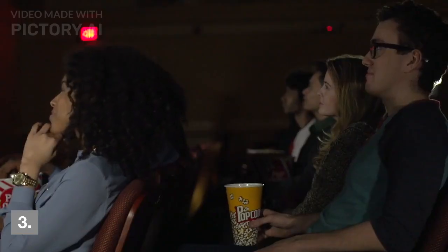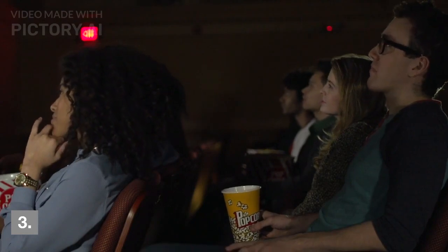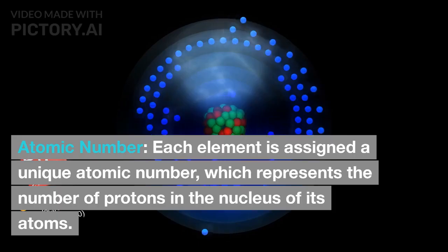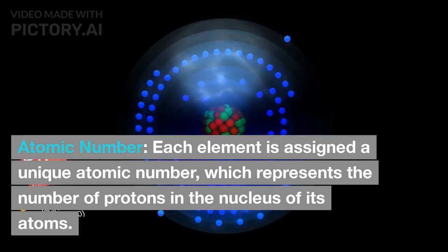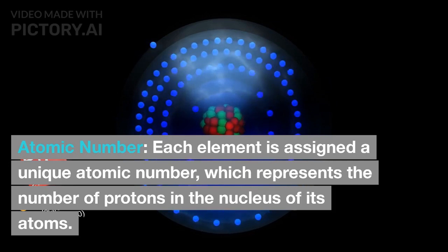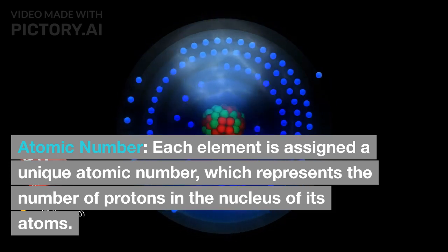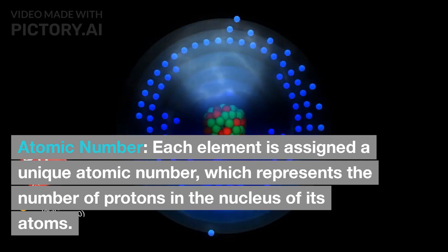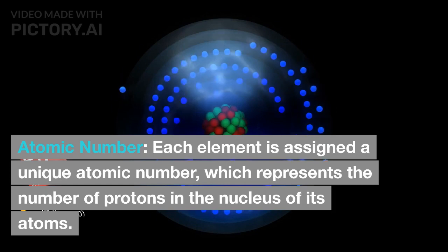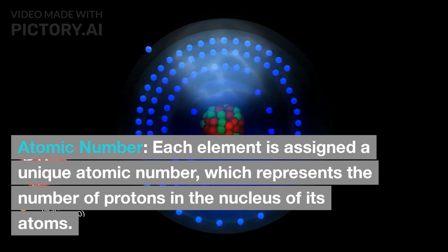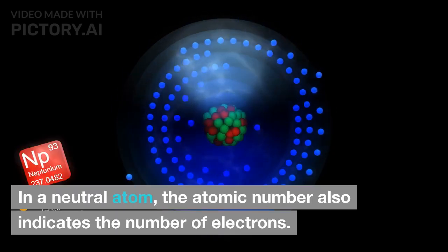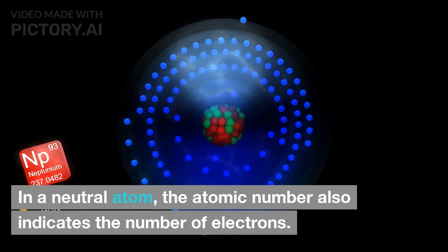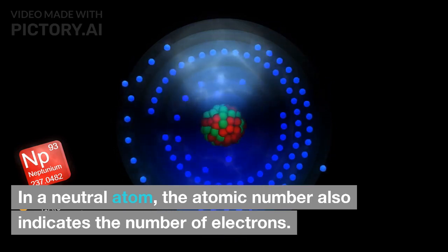3. Atomic number: each element is assigned a unique atomic number, which represents the number of protons in the nucleus of its atoms. In a neutral atom, the atomic number also indicates the number of electrons.